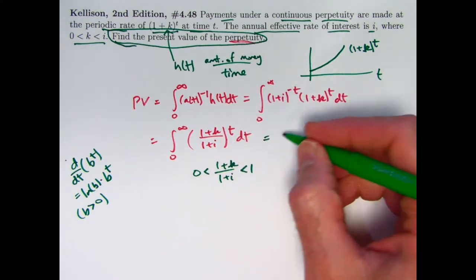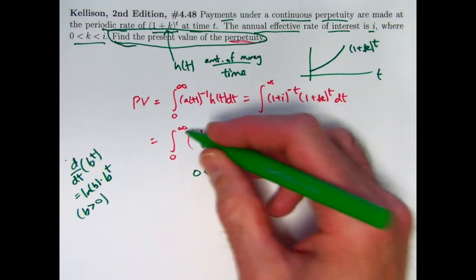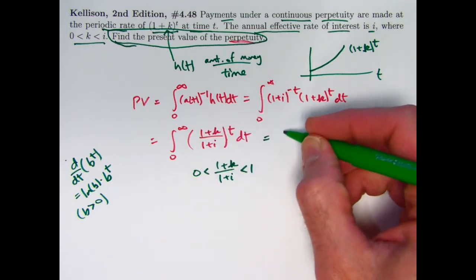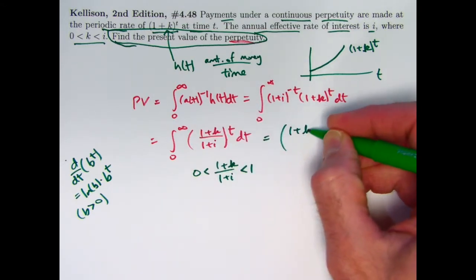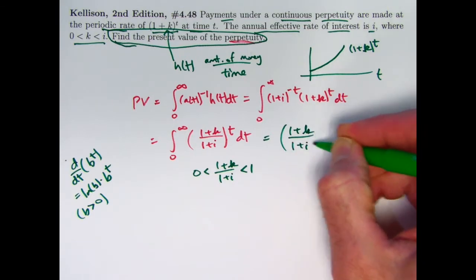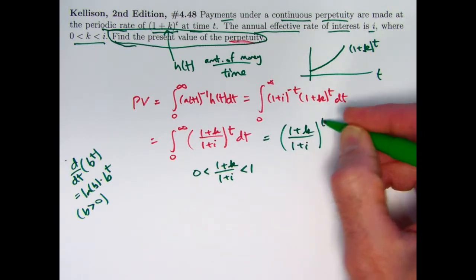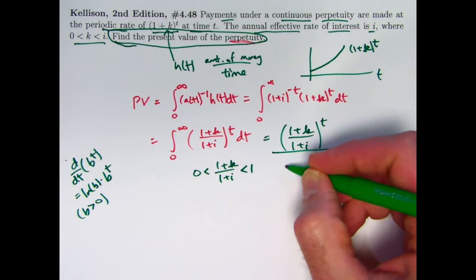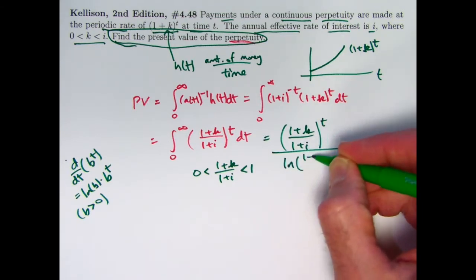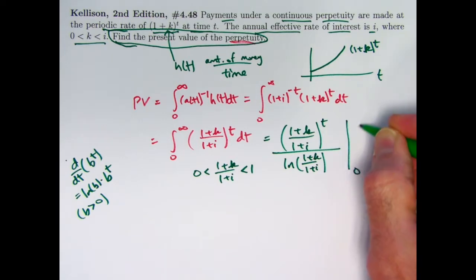Technically speaking, with the improper integral, there's also a limit going on. I won't bother writing the limit sign. If your teacher wants you to write limit signs, then you should do that. We've got this thing all divided by natural log of 1 plus k over 1 plus i being evaluated from 0 to infinity.